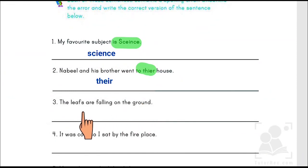The leaves are falling on the ground. Remember the F rule? Here we are supposed to convert the F into V.